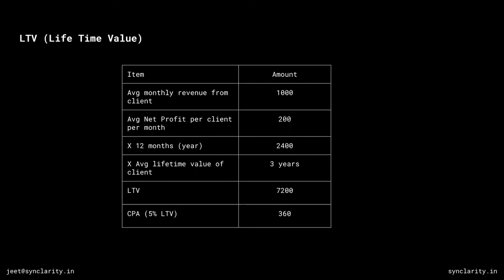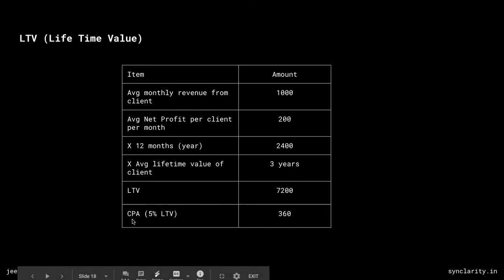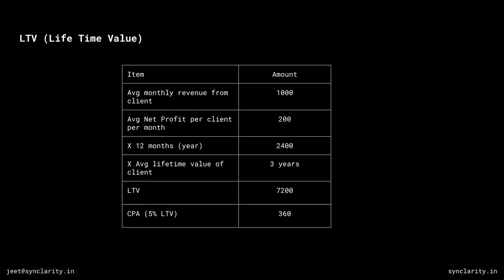If my lifetime value is 7,200, as a marketing basic I can calculate cost per acquisition — how much should I spend to get this customer. The industry standard is 5% of lifetime value. So to get one customer, you can spend around 360 rupees. You're spending 360 rupees to get a client who is going to give you a value of 7,200 — not a bad deal. This is the number we need because CPA directly informs us what campaign to run and what the budget of that campaign should be.